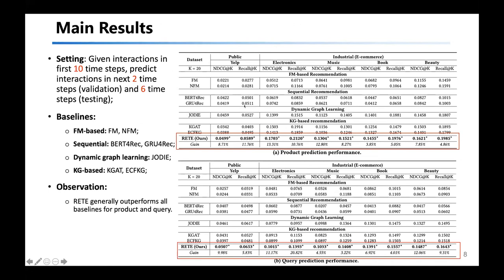These two tables show the main results. During training, we use interactions from the first 10 time steps, and use interactions from the next two and six time steps for validation and testing respectively. We compare our framework with four types of baselines: factorization machine-based models, sequential recommendation models, dynamic graph learning models, and knowledge graph-based recommendation models. As shown in these two tables, for both product prediction and query prediction, our RATI framework can generally outperform all baselines.